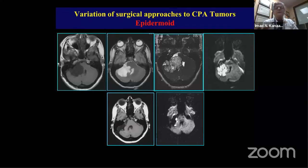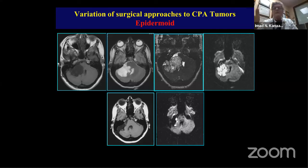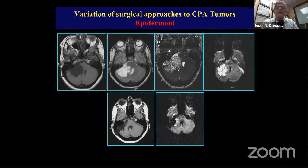The last tumor type is epidermoid. Epidermoids can reach a large size — they are creeping tumors that go from one system to the other, around vessels and nerves, without respecting them. Their removal is actually enjoyable once you do it. I call it the 'chopstick technique' using only a dissector and suction, and I'll show a video using the endoscope.